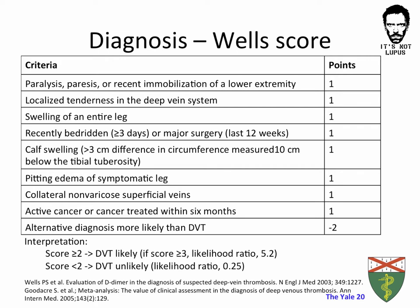Combining these clinical and historical features yields the Wells score, which assigns one point each to key clinical findings on history and physical exam. The purpose of the Wells score is to give you a pre-test probability of how likely that patient is to have a DVT. With a Wells score of less than 2, a DVT is basically unlikely, with a negative likelihood ratio of 0.25, which is very helpful to rule out a DVT. If your Wells score is greater than 3, you have a positive likelihood ratio that is also quite helpful.